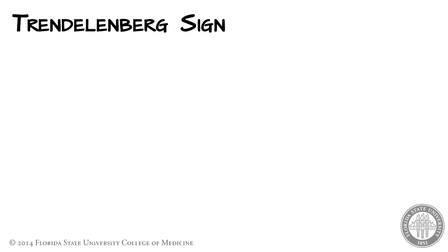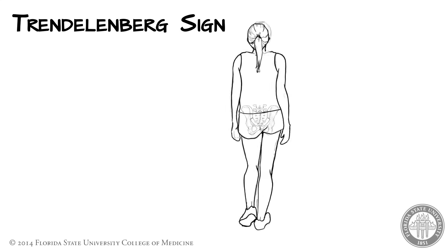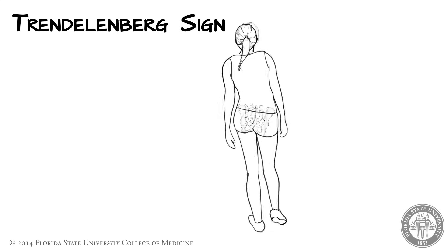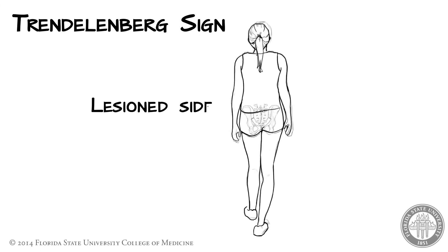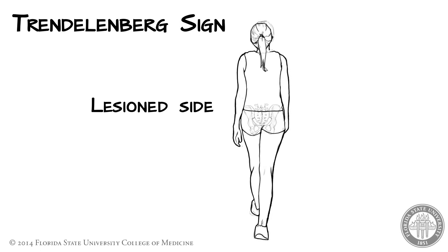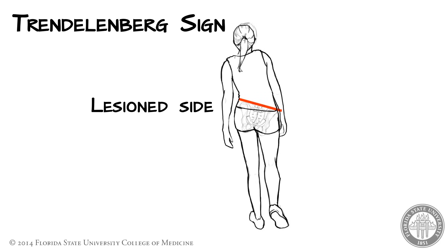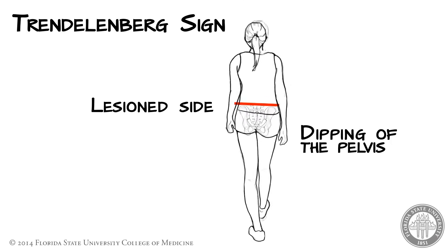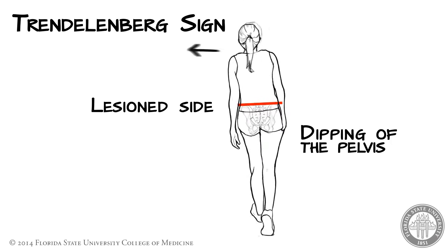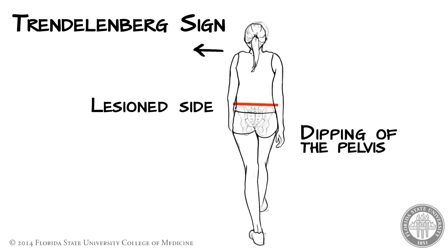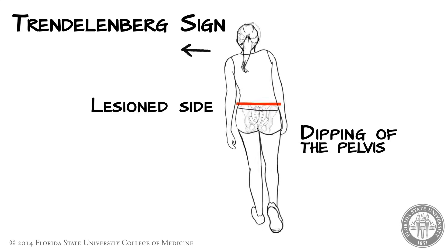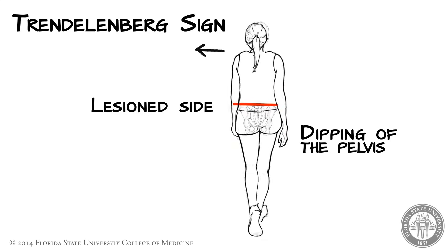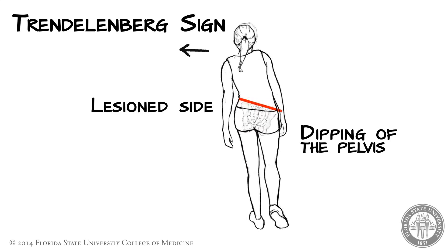The Trendelenburg sign is most apparent during the walking gait cycle. When the weight of the body is supported by the leg on the lesion side, the pelvis rises ipsilaterally. This can more accurately be described as a dipping of the pelvis toward the contralateral side. Because the pelvis cannot be maintained in a level plane by the lesioned abductors, the patient falls toward the good side and simultaneously leans the torso toward the lesioned side in an attempt to maintain balance.